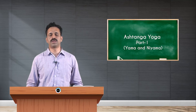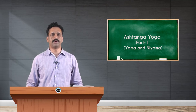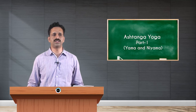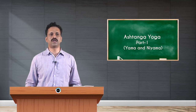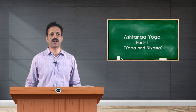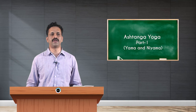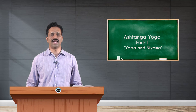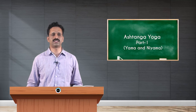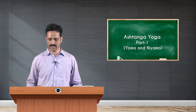Asana means harmony with your body. Pranayama means breath control, or harmony with your vital energy. Pratyahara means harmony with your emotions. Dharana is harmony with your thoughts. Dhyana is contemplation or meditation. Samadhi means the goal of yoga, or enlightenment. Ashtanga means eight, and Angini means limbs.